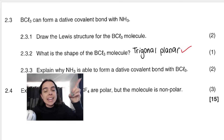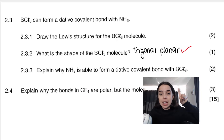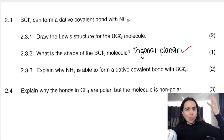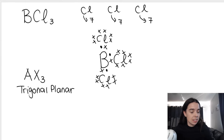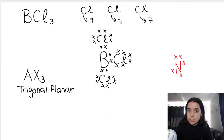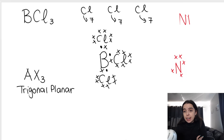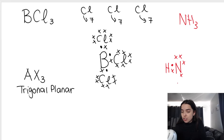Next question: explain why NH3 (ammonia) is able to form a dative covalent bond with BCl3 (boron trichloride). The best way to understand this is to draw the Lewis structure of ammonia. Nitrogen has five valence electrons. In NH3, three hydrogens surround it — each hydrogen shares its one valence electron with nitrogen. So nitrogen has a complete octet structure.